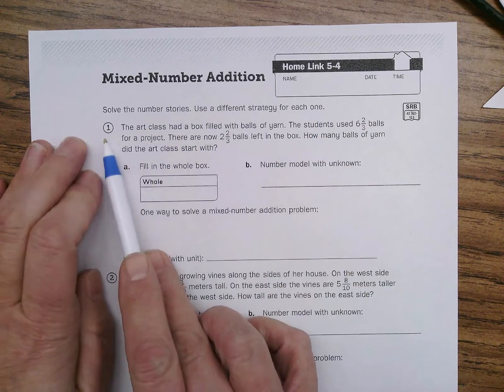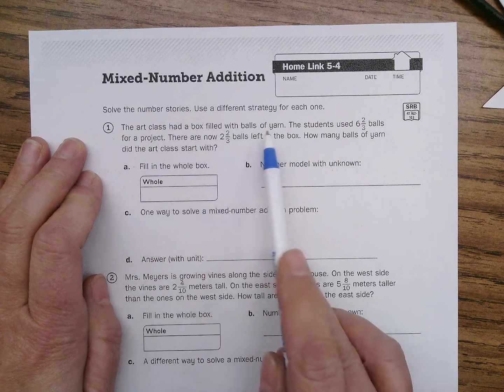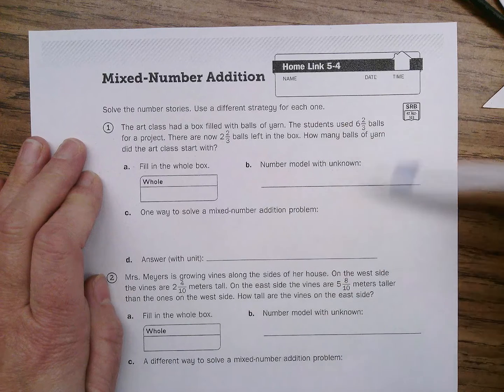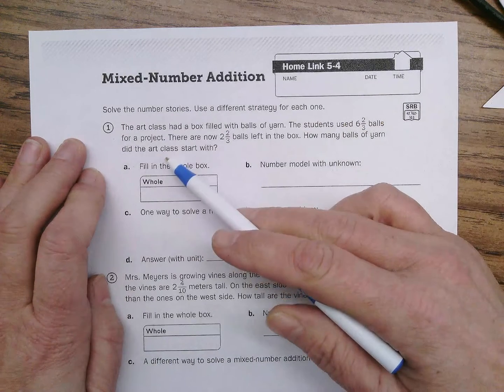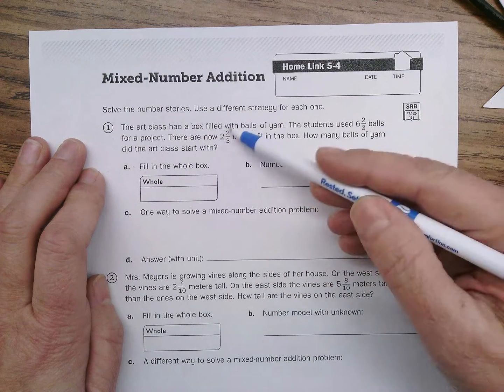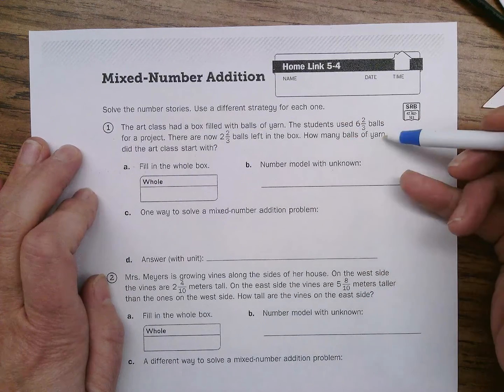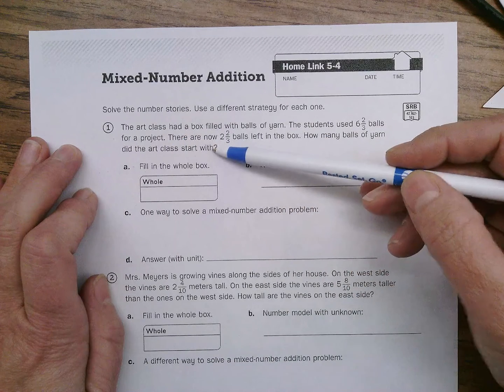Number one, the art class had a box filled with balls of yarn. The students used six and two-thirds balls for a project. There are now two and two-thirds balls left in the box. How many balls of yarn did the art class start with?